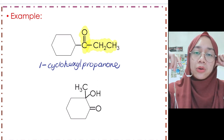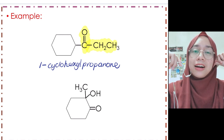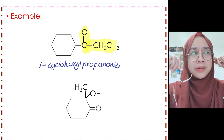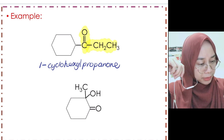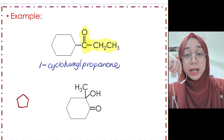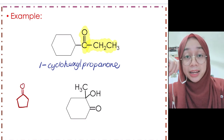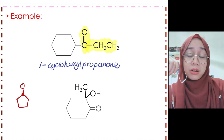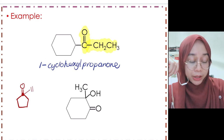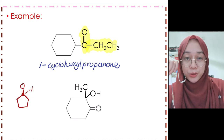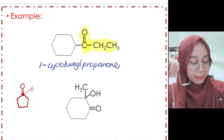Note that cycloaldehydes like cyclopentanal or cyclobutanal cannot exist. This is because aldehyde requires at least one hydrogen on the carbonyl carbon, but in a ring, that carbon already has four bonds completed — there is no room to add a hydrogen. Therefore, cyclic aldehyde ring structures cannot exist.